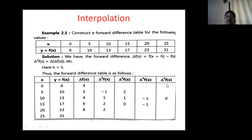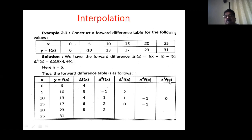If five values of x or y are given, then the forward difference table terminates at delta raised to four — that is, the fourth difference. If ten values are given, the last column is delta raised to nine f(x). Here, six values are given so the last column is delta raised to five f(x), and if five values are given the last column is delta raised to four f(x).